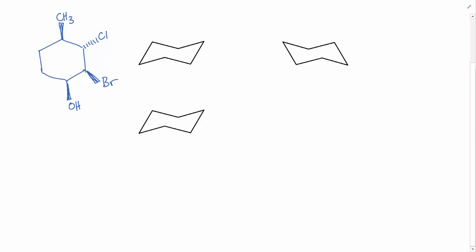In this video, I'm going to show you how to quickly draw a chair flip. So let's start by drawing this planar cyclohexane representation into a chair conformation.